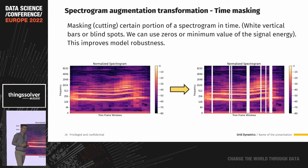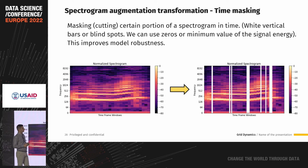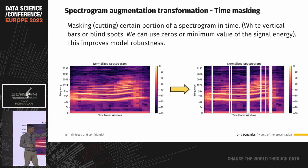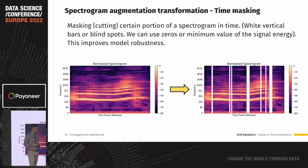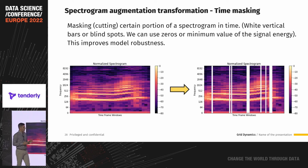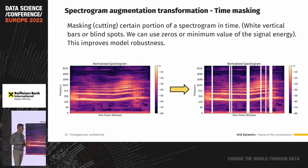Now let's talk about spectrogram augmentation techniques. In time masking, we take the original spectrogram and apply vertical white stripes — removing information at randomly selected points in time. If we imagine the spectrogram as a matrix, certain columns are filled with zeros, or alternatively with an average, median value, or signal energy.